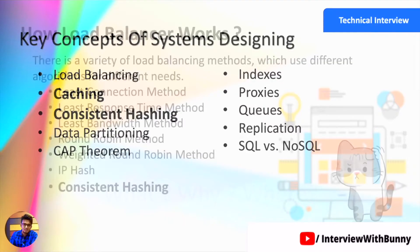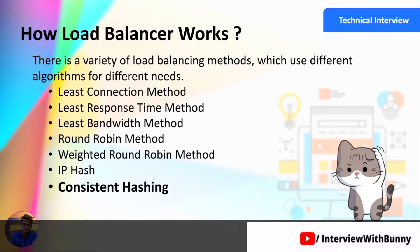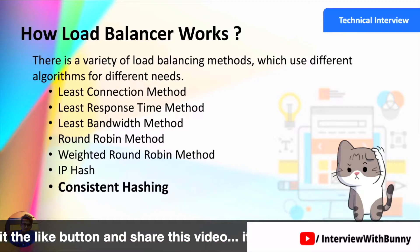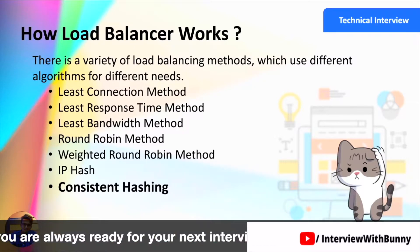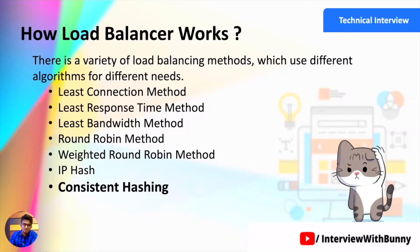In our previous video on load balancing we discussed how a load balancer actually works, including some important algorithms by which a load balancer distributes traffic across various servers. One of those methods is consistent hashing. But before that, we will discuss the caching mechanism in our distributed system, because consistent hashing is a general algorithm used not only by a load balancer but also within the caching mechanism.